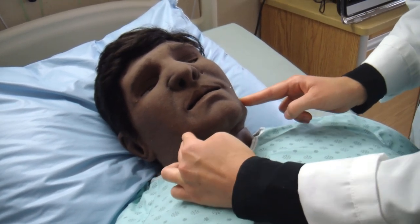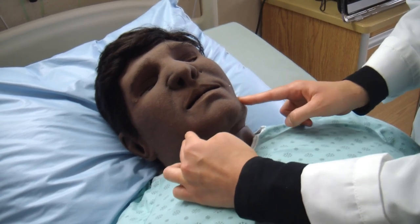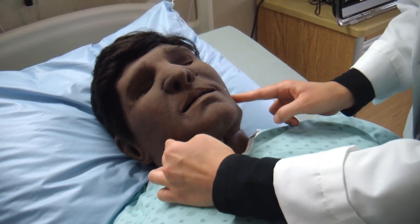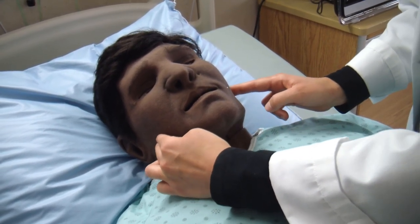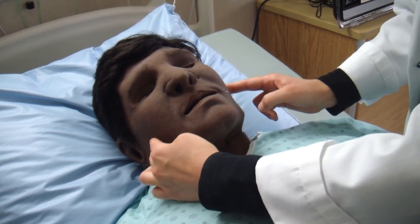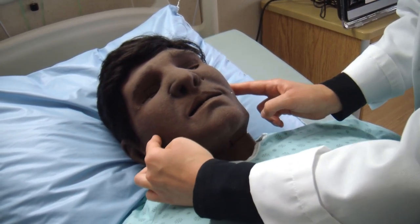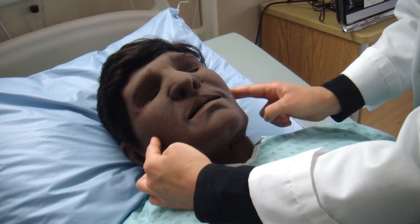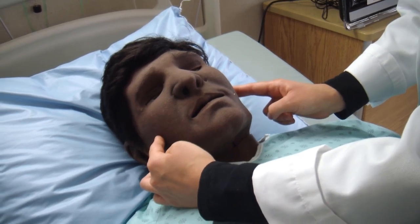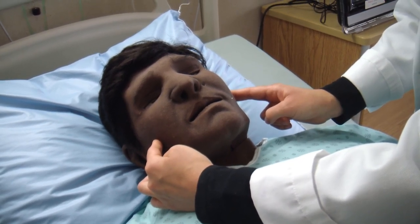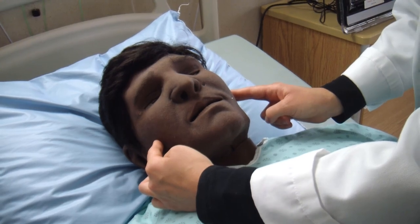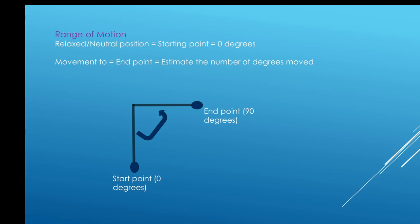Ask the patient to open their mouth. The vertical distance of their open mouth should be between 3 to 6 cm. Have them protrude and then retract their jaw — there should be no deviation. With the mouth partially open, ask them to move their jaw laterally to each side; it should move 1 to 2 cm. You can also ask the patient to do these movements against resistance.